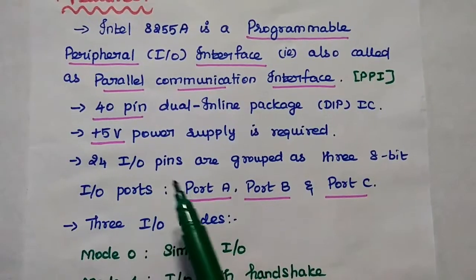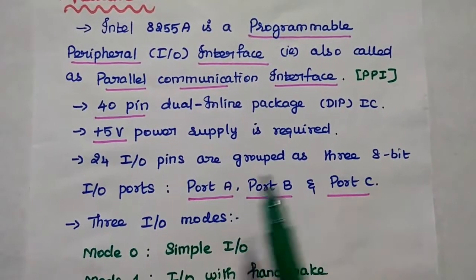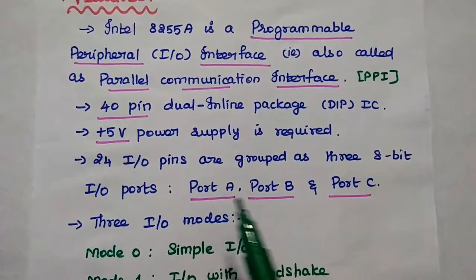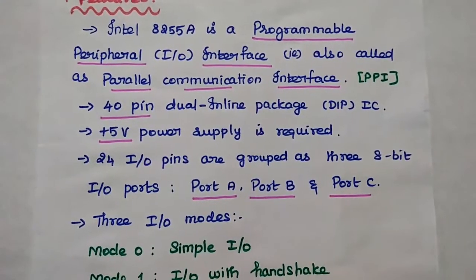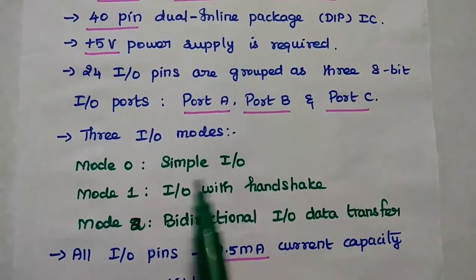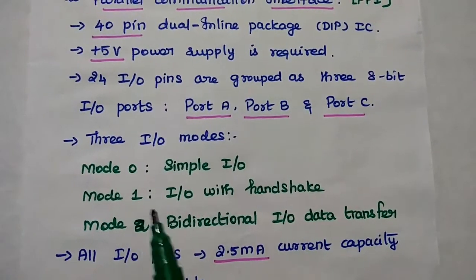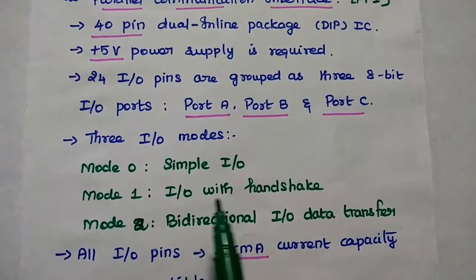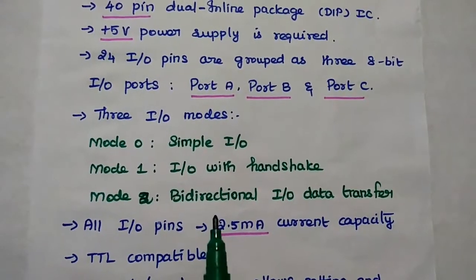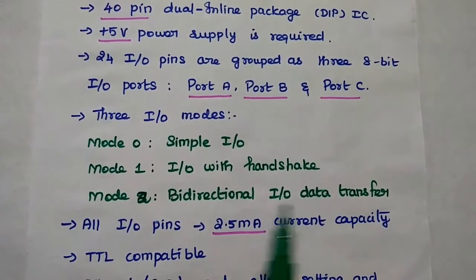The 8255 has 24 input/output pins which are grouped as three 8-bit input/output ports: Port A, Port B, and Port C. There are three input/output modes available — Mode 0, which is simple input/output mode; Mode 1, which is input/output with handshake signal; and Mode 2, which is bidirectional input/output data transfer.